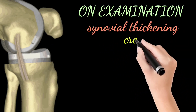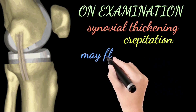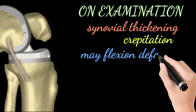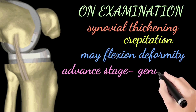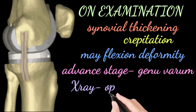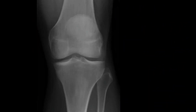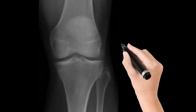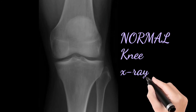Now we will discuss examination findings. On examination, there may be synovial thickening, crepitation — that is the clicking sound whenever you move the knee — and flexion deformity and genu varum, also in the advanced stage.